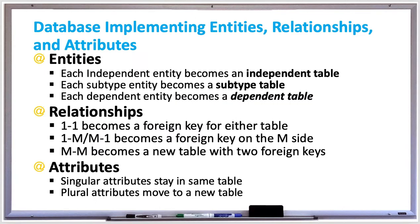In this video we're going to learn about implementing entities, relationships, and attributes in the database. In the logical design phase, each of the entities becomes an independent table and each attribute becomes a column. Then the table and columns are reviewed and revised in subsequent logical design steps.